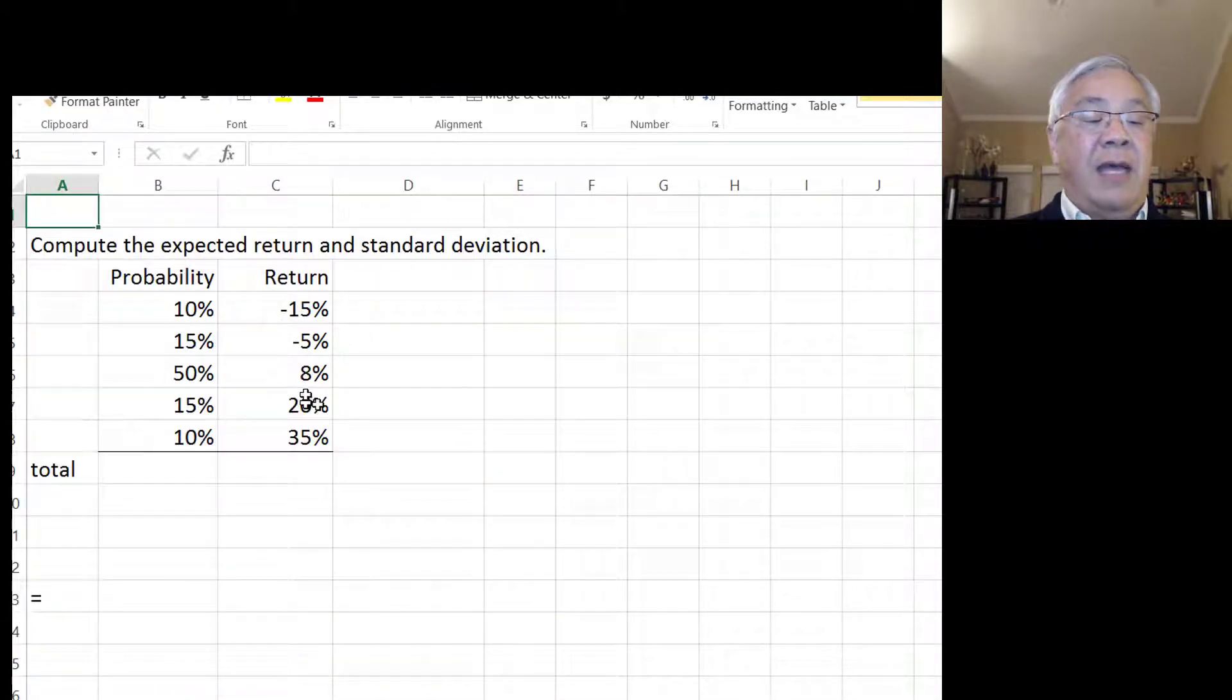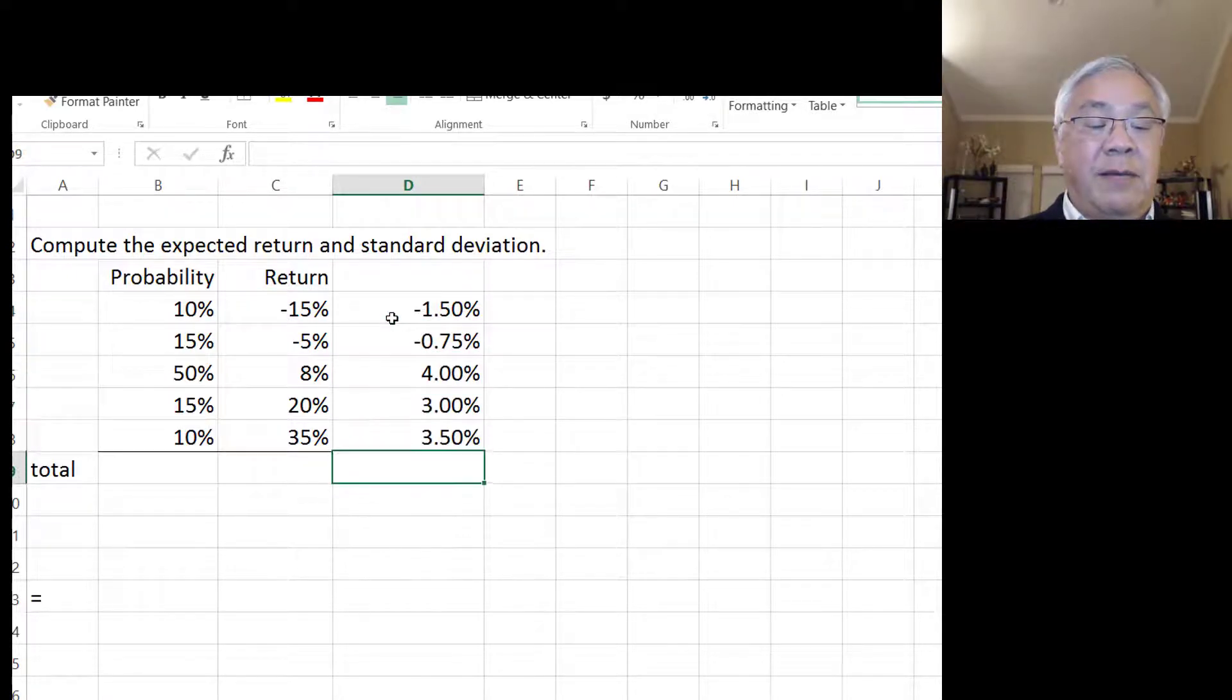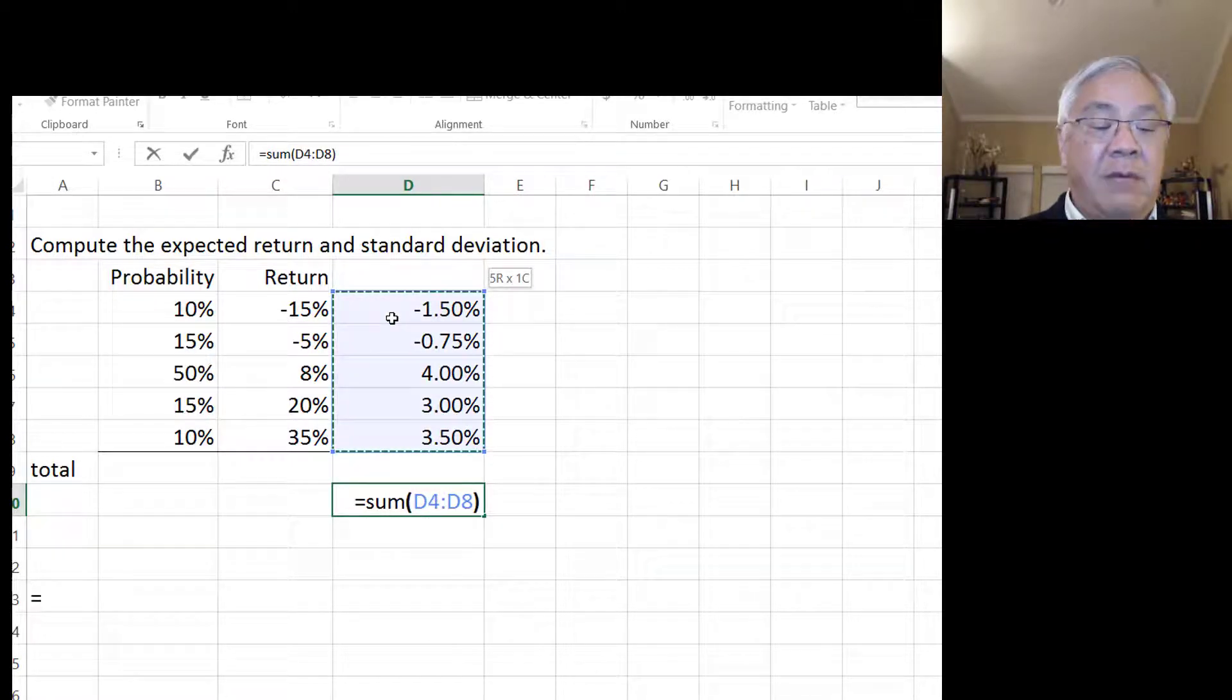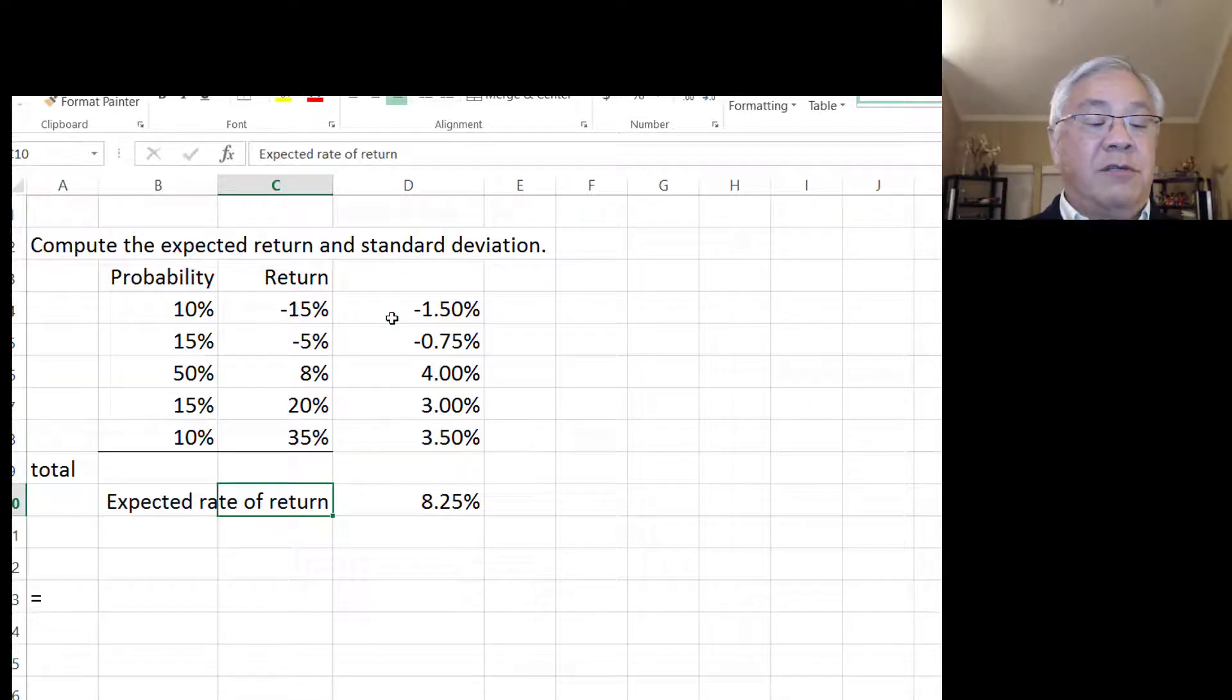Go to the second tab, and the first thing to notice is that we have probabilities and the returns. So if we did it the old-fashioned way, we would go equals the probability times the return, and we copy that all the way down, and then we do sum equals sum, and add those together, and we would come up with the expected rate of return is equal to 8.25%. So that's one result.